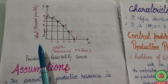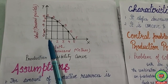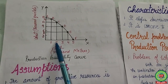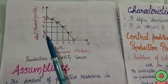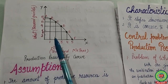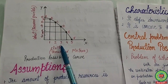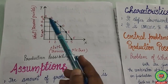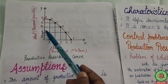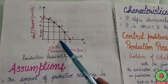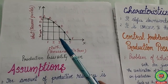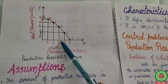The Production Possibility Curve is also known as the Transformation Curve, because movement along this curve means producing one more unit of a commodity by sacrificing some amount of another commodity.